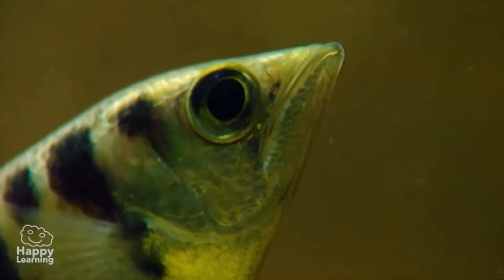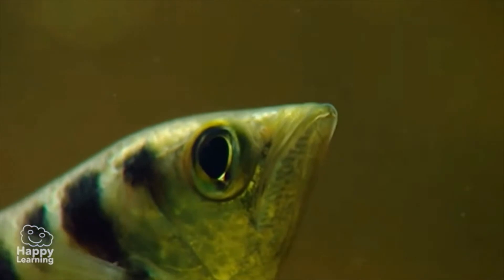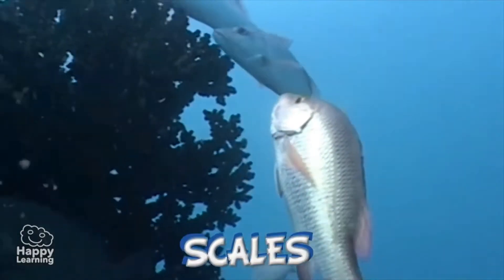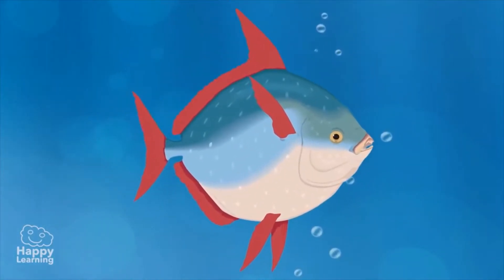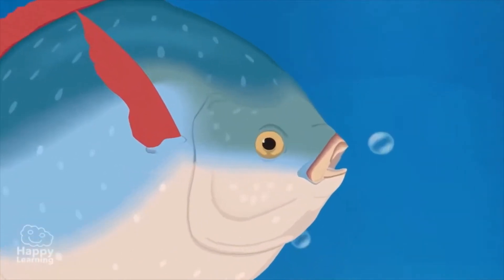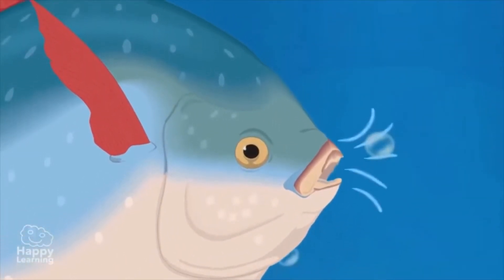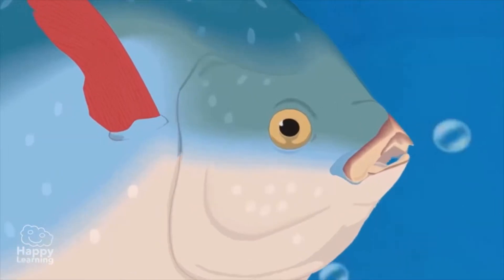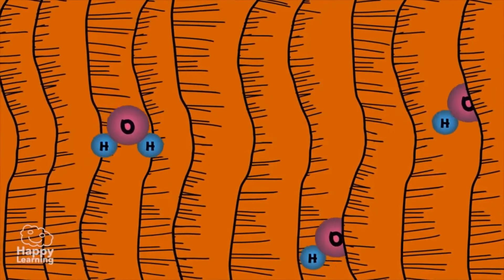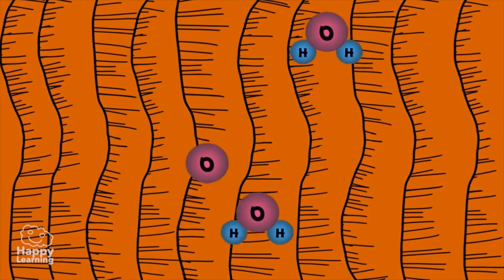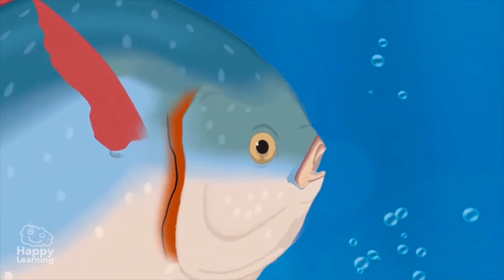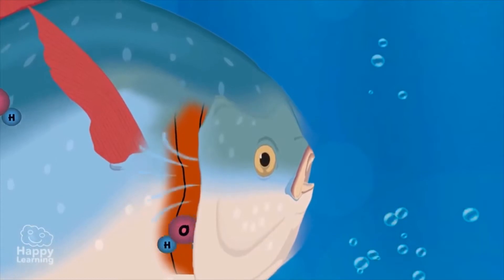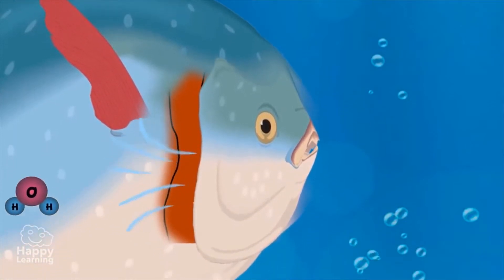Another really important fact to remember is that almost all fish are covered in scales. The gills are the fish's respiratory organ. Water enters through the mouth and goes to the gills, which collect the oxygen and distribute it to the rest of the body through the blood vessels. Then the water is expelled through an opening behind the head called the gill flap.